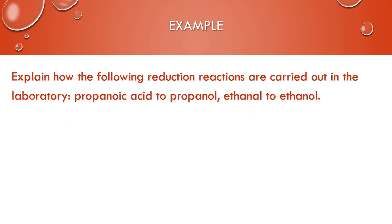Explain how the following reduction reactions are carried out in the laboratory. So propanoic acid to propanol. You can take the propanoic acid and change it to an aldehyde and then to the primary alcohol using something like lithium aluminum hydride and heat to act as a reducing agent. Then ethanal is an aldehyde. You can also get that to the alcohol ethanol in the same way. Use lithium aluminum hydride and heat.